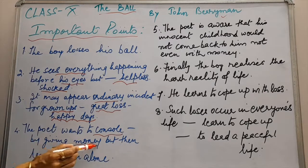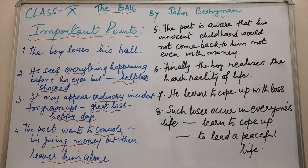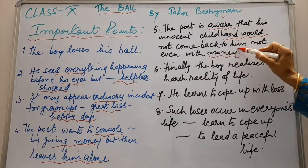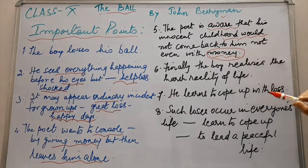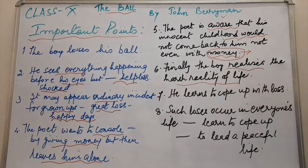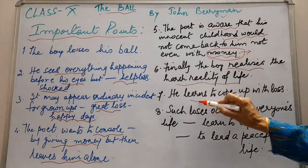The poet wants to console him by giving money but then leaves him all alone to learn from his bitter experience. The poet is feeling sad because the boy is sad — standing rigid and nervous, trembling and staring at the ball because he will not be able to retrieve it. The poet is aware that innocent childhood would not come back, not even with money. With money we can buy anything but we cannot buy the thing which we have lost; we may buy identical things but not the exact thing lost. Finally the boy comes to terms and realizes the harsh reality of life: things will be lost and he must cope up, not brood over them, but move ahead.